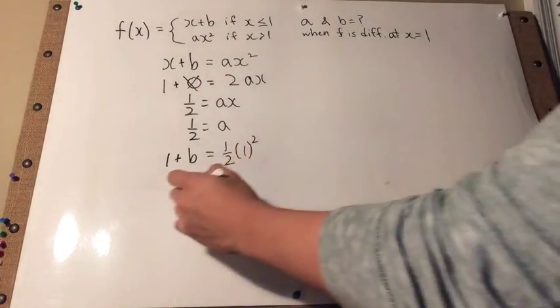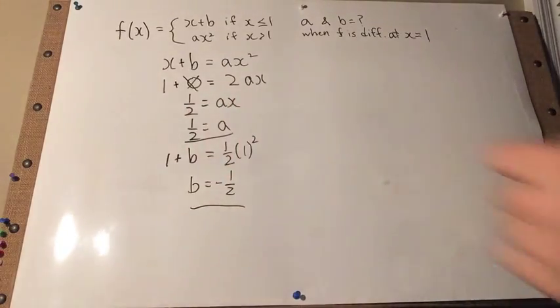Now b equals negative half, a equals 1 half. So the answer choice would be A. Okay, thanks for watching, guys.